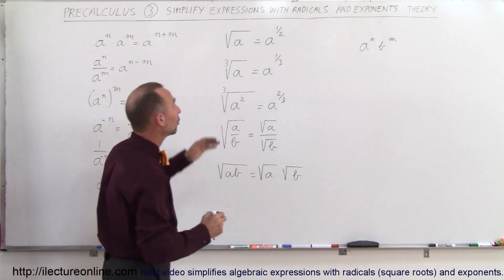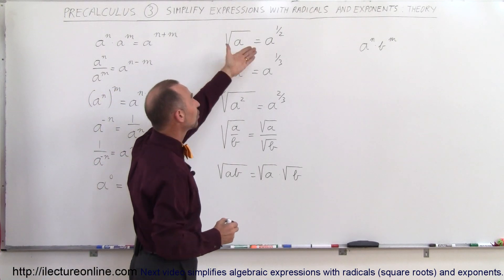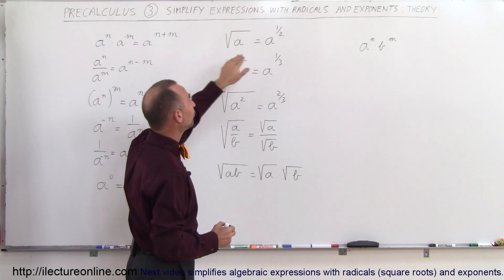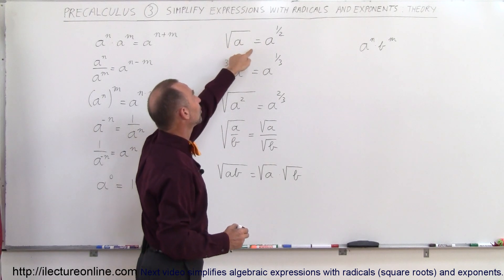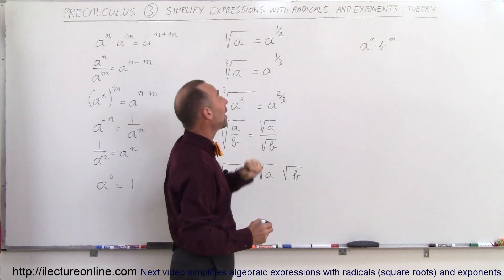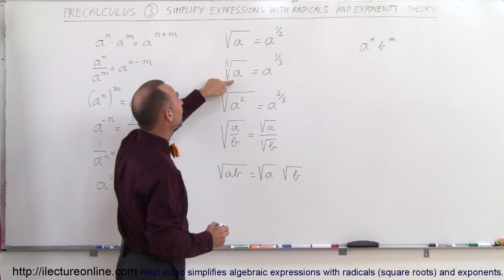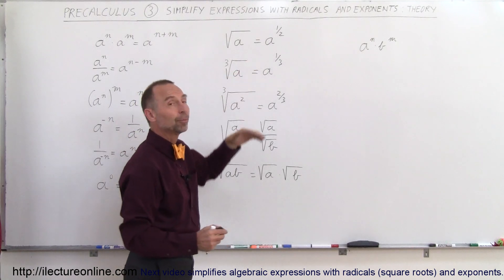As far as radicals are concerned, radicals are just a different way of writing something with exponents, so we can go back and forth. The square root of A is the same thing as A to the 1 half power, or the cube root of A is the same as A to the 1 third power.